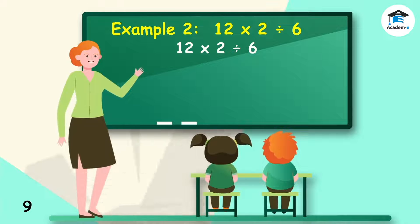We do the multiplication first because it comes before division. 12 times 2 is 24 divided by 6 is 4.